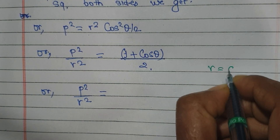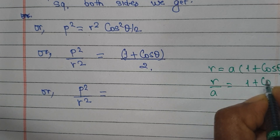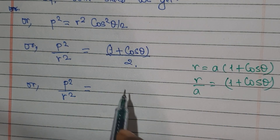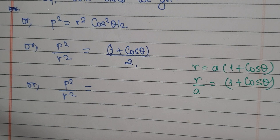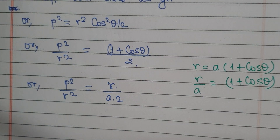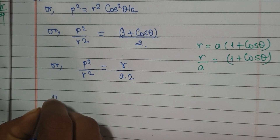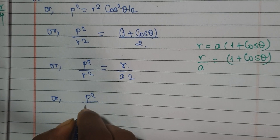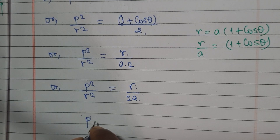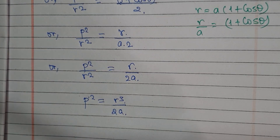Now we substitute r = a(1 + cos θ). Using 1 + cos θ = 2cos²(θ/2), we have r/a = 1 + cos θ = 2cos²(θ/2), so cos²(θ/2) = r/(2a). Substituting into p² = r² cos²(θ/2), we get p² = r³/(2a).